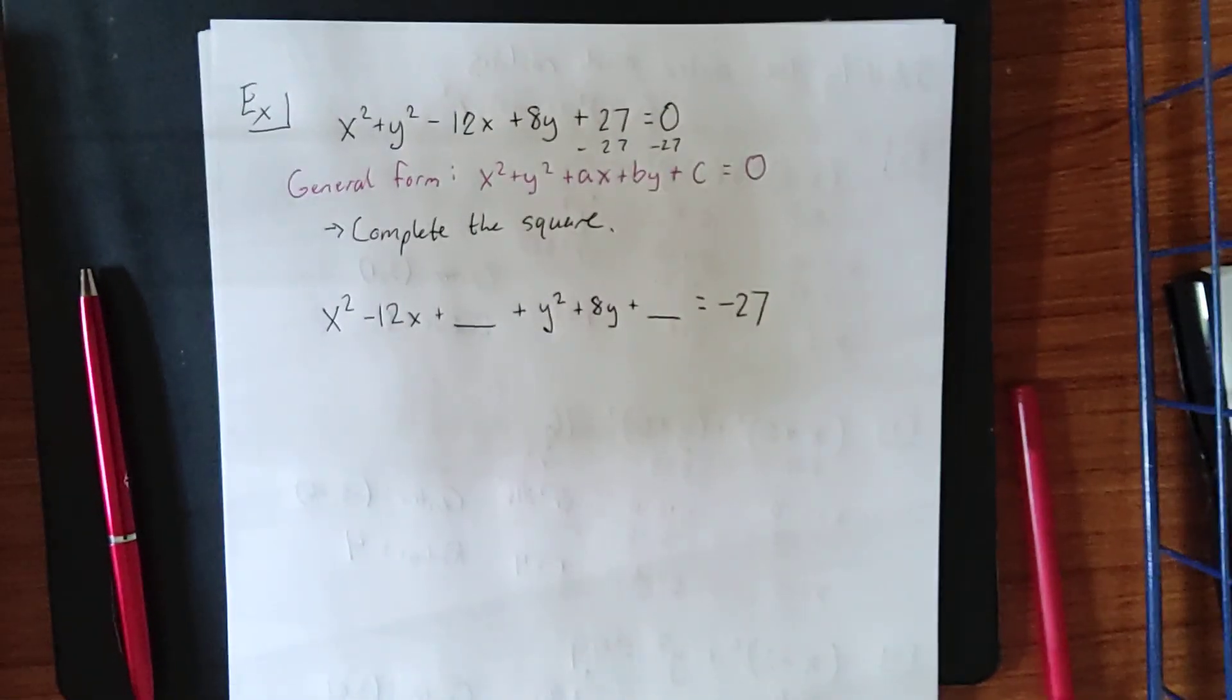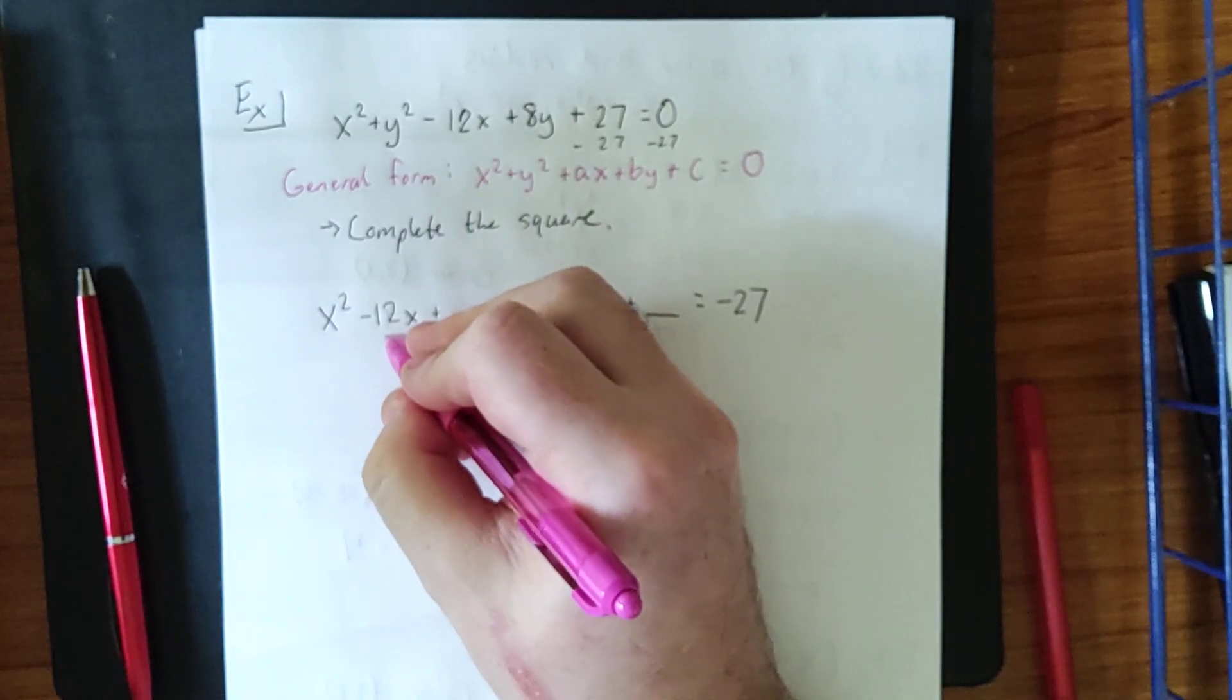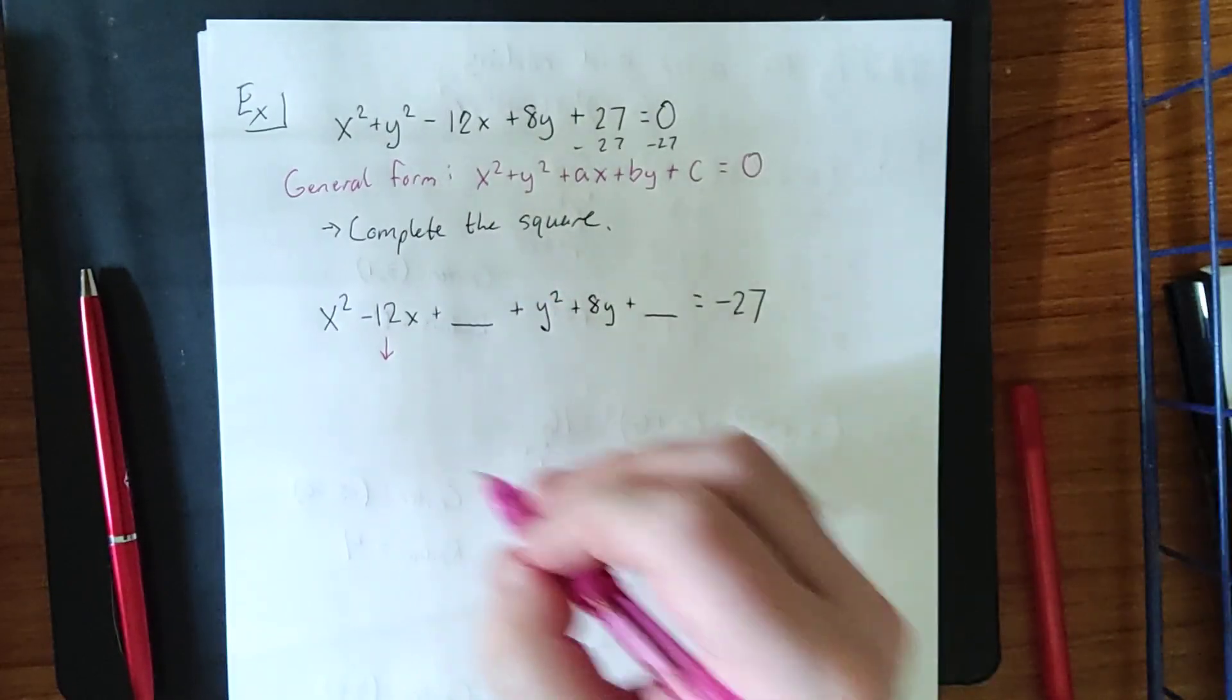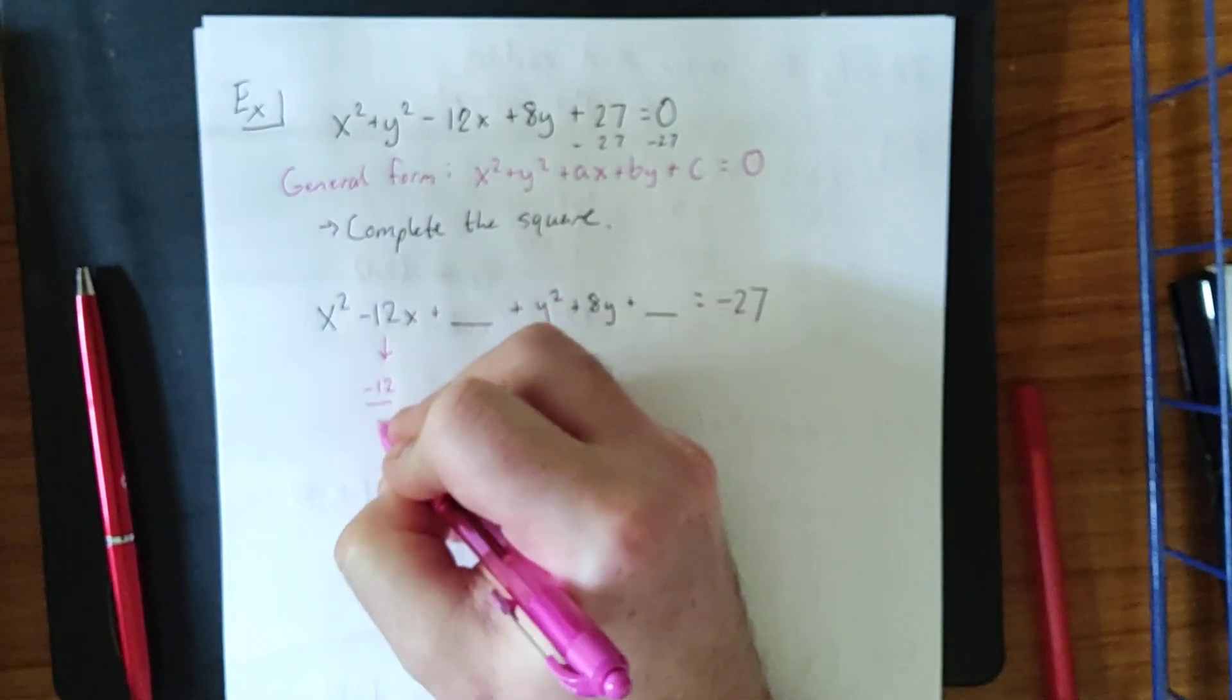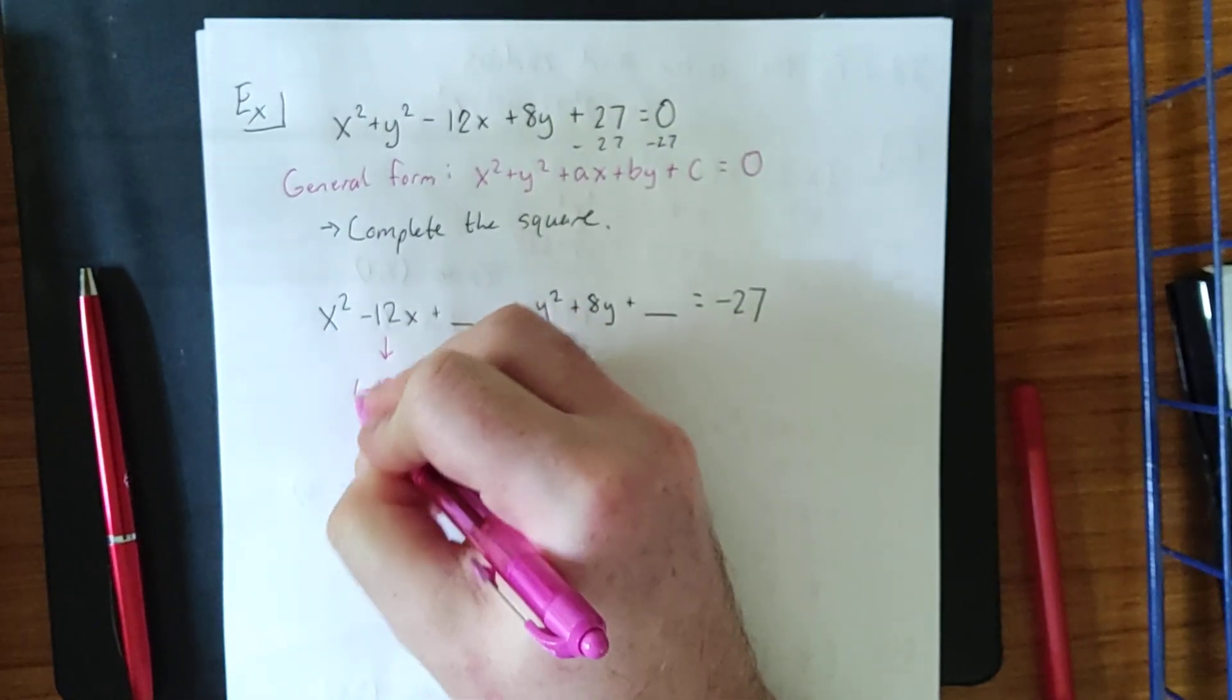Now, the process for completing the square is as follows. We grab our coefficient of the first power term of both x and y. We'll do x first. We take half of this, and we square the result.